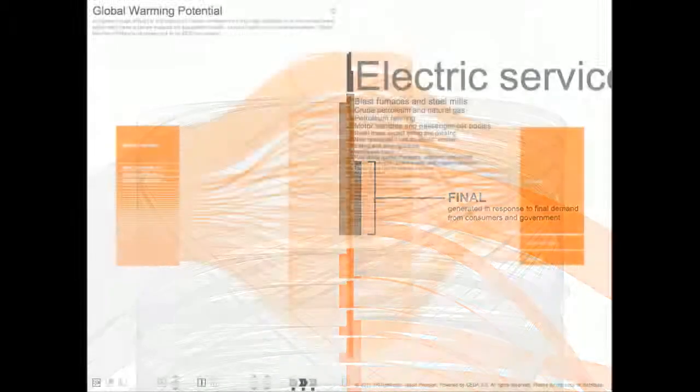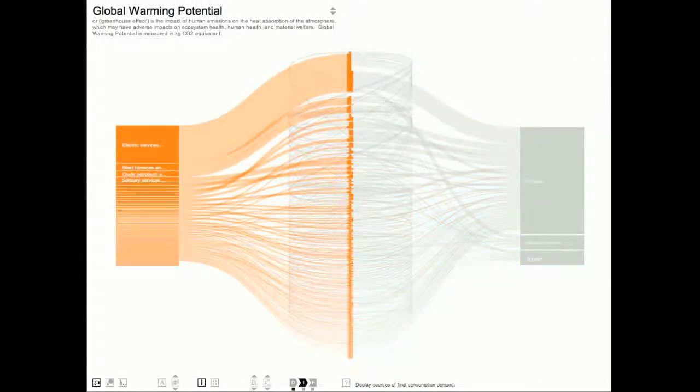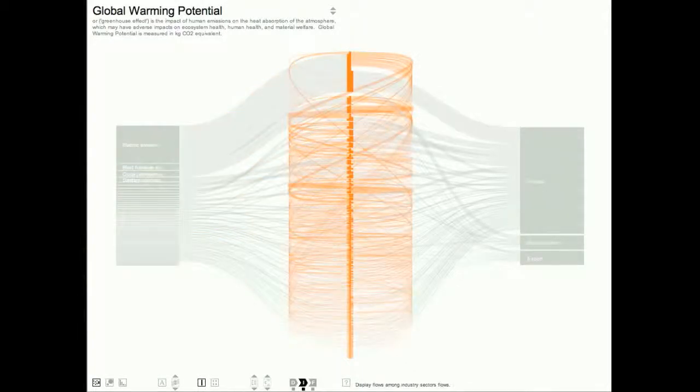Looking at the big picture, the direct impacts are shown on the left in descending order of magnitude. You could think of the left-hand side of the screen as our natural environment, and all those direct impacts are the environmental cost that is incurred by different industrial activities. The center of the screen is the zone of industrial activity, where different sectors buy and sell for one another, passing on these environmental costs in direct proportion to the goods and services that they sell to one another.